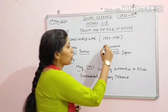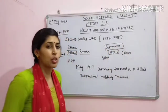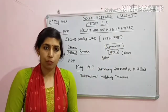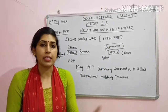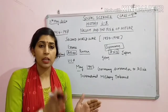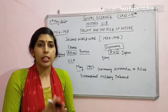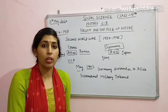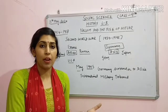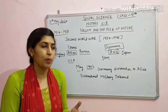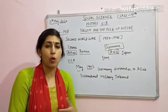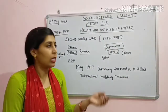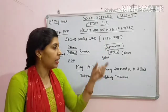Ab Germany ne aisa kuch kiya tha jiski wajah se isse punishment milegi. Germany mein leader tha Hitler. Aur Hitler ko support karne wale, iske supporter the - Nazi. Ab Nazi ideology thi Hitler ki ki other communities hain, unko Germany se hata do. Jewish hain, Polish ke log hain, ya France ke log hain - sab ko eliminate kar do, jo unhealthy hain unko bhi marwa diya. Matlab Hitler ne bohut saare begunaah logon ko marwa diya. Toh ye sabse badi mistake thi Hitler ki.